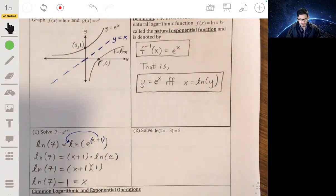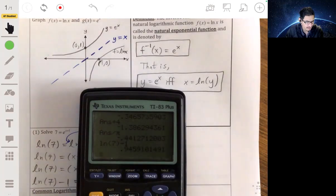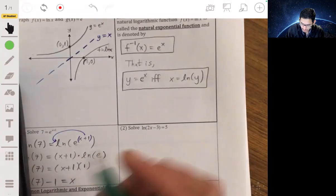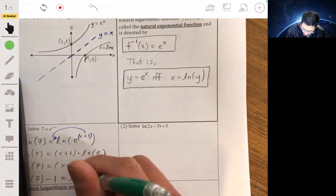And if you want to get an approximation, we can use your calculator. And we'll get about 0.9459.